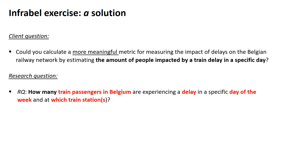If you translate this to a more specific research question, it comes down to: how many train passengers in Belgium — and I indicated 'train passengers in Belgium' in red, which means this is a concept or construct that we need to operationalize — are experiencing a delay in a specific day of the week, and at which train stations? So at the end of the exercise, I want a breakdown of, for example, Monday — how many people experience a delay on Monday in Belgium, and which stations are primarily responsible for that? Probably Brussels or Ghent.